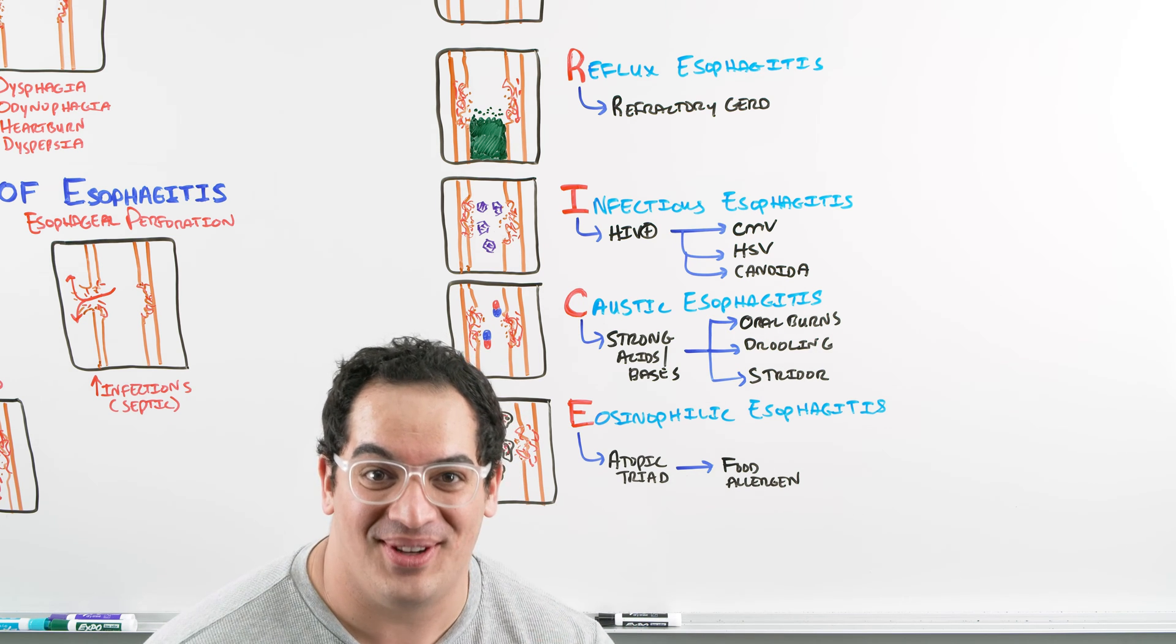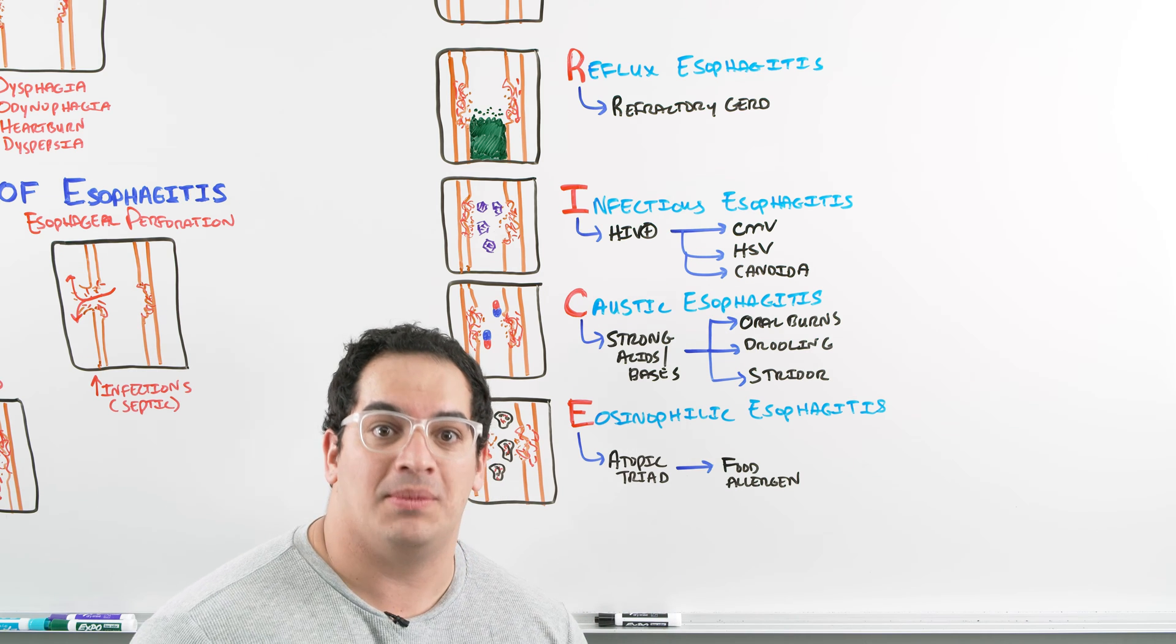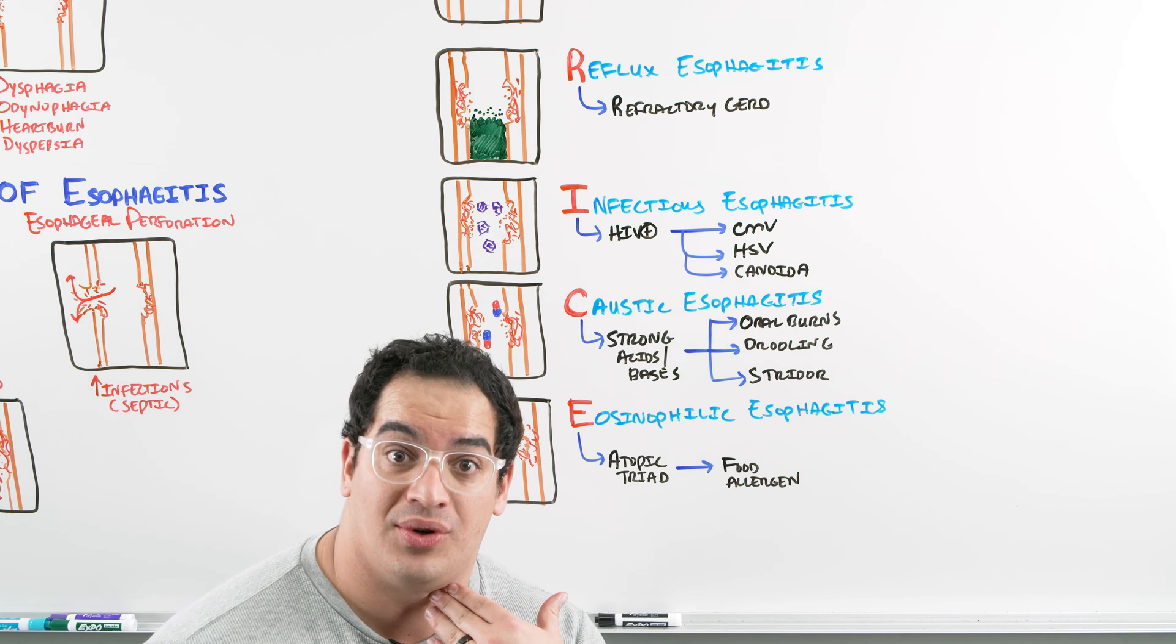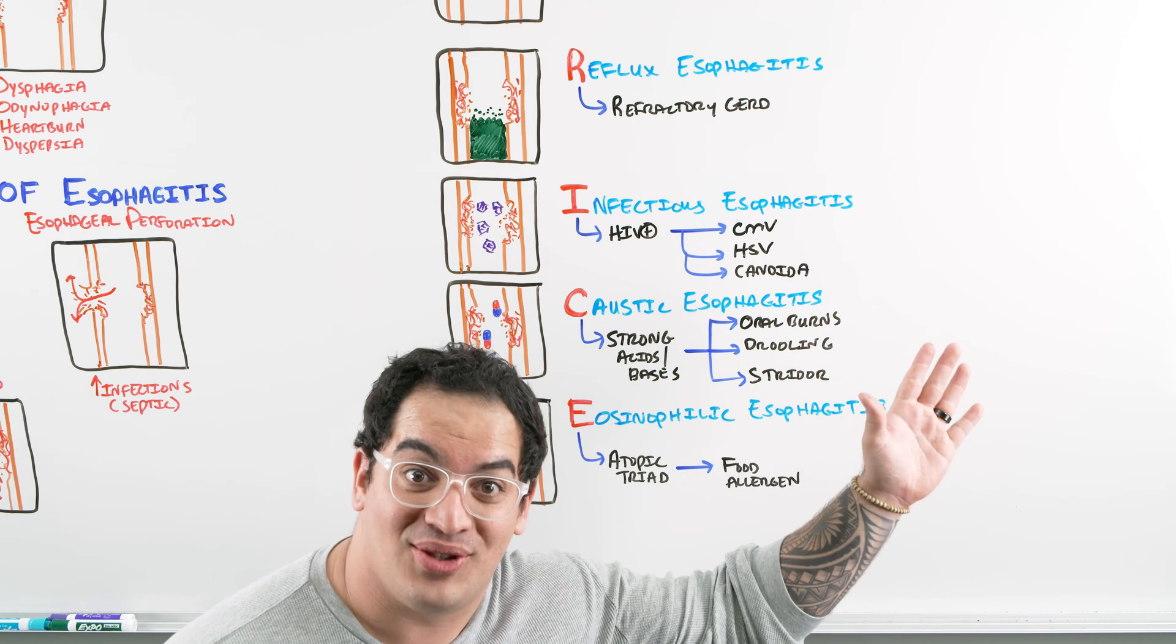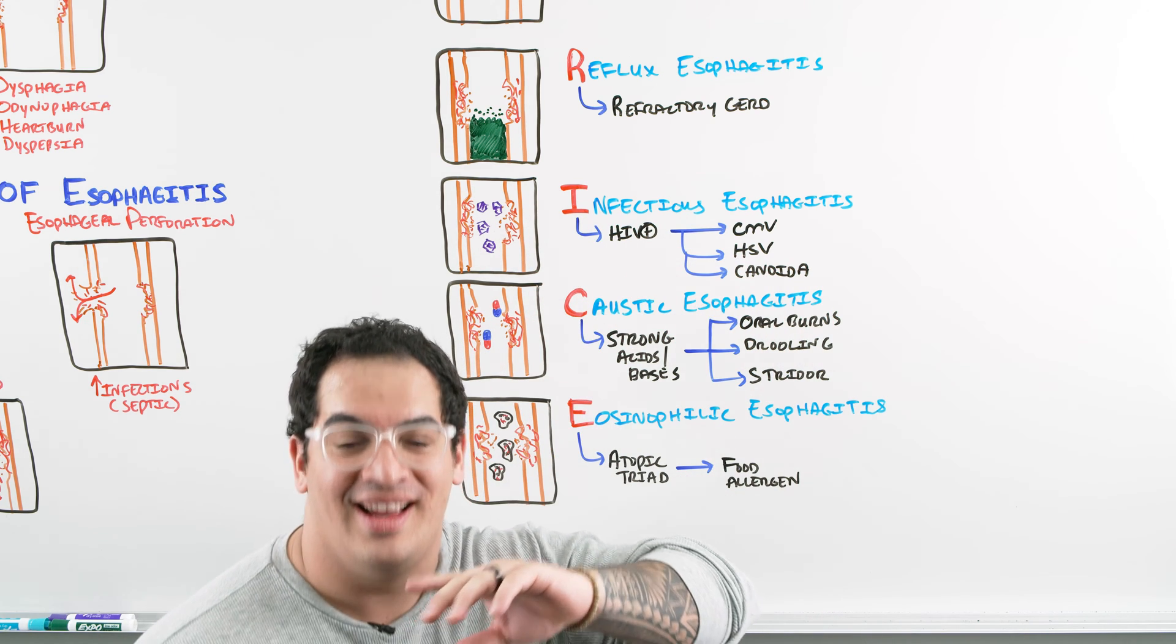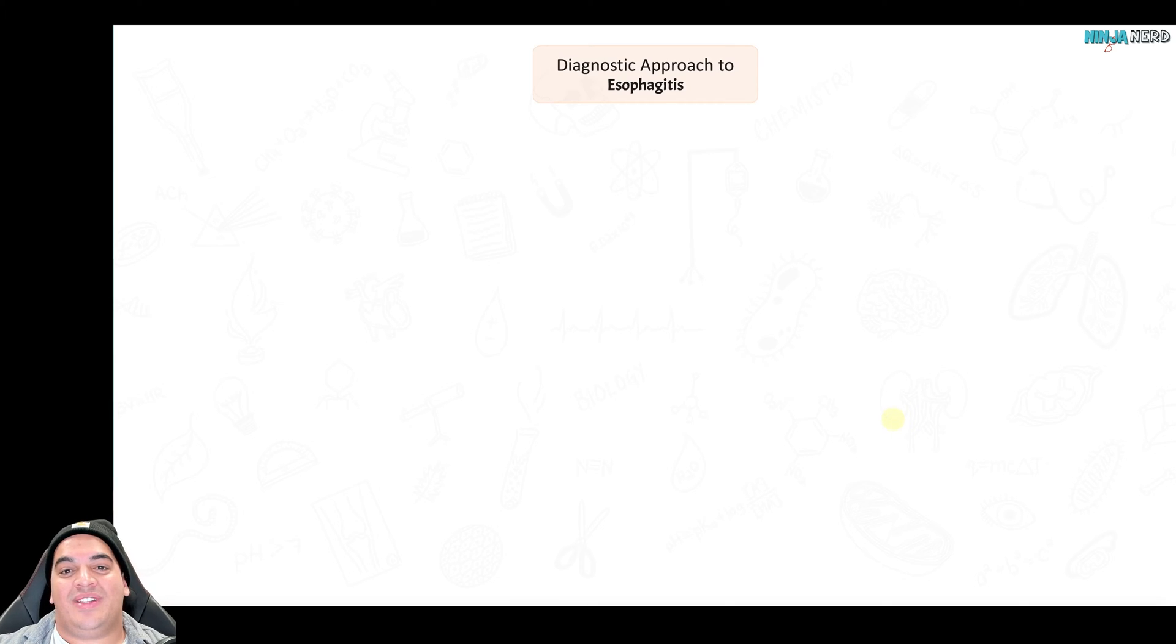Patient has the atopic triad features - asthma, allergies, dermatitis - they ingest a food allergen, boom, eosinophils infiltrate the esophagus and cause massive inflammation. These are the causes of esophagitis. Now what we have to do is take the patient who comes in with odynophagia, dysphagia, retrosternal chest pain, complications, and diagnose the esophagitis and the cause of it.